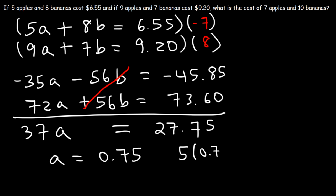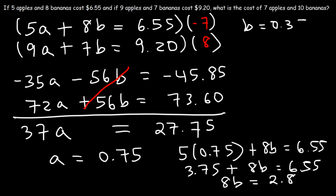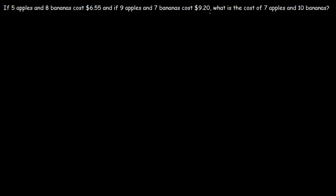Now let's use the first equation to find b. Substituting a equals 0.75: 5 times 0.75 plus 8b equals 6.55, so 3.75 plus 8b equals 6.55. Subtracting 3.75 from both sides: 8b equals 2.80. Dividing by 8 gives b equals 0.35, so each banana costs 35 cents.